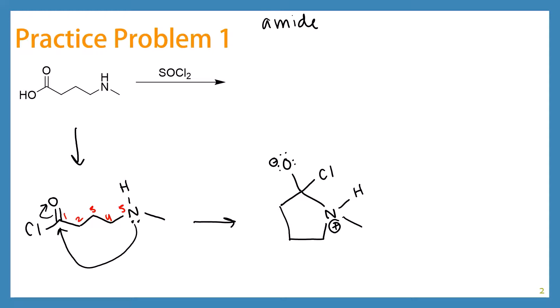So now we have this tetrahedral intermediate here. And we know that what it wants to do is collapse those electrons on the oxygen to recreate a pi bond. And we're going to kick out chlorine in the same step. And now we have our carbonyl. And we can kind of start to see our amide here, but it still has this pesky proton on it. So we can deprotonate it.